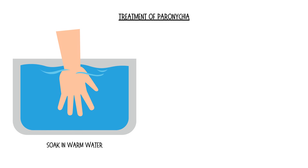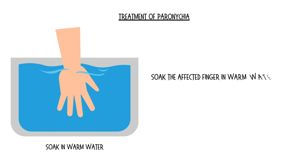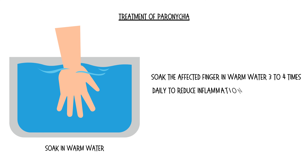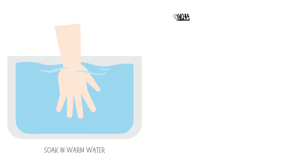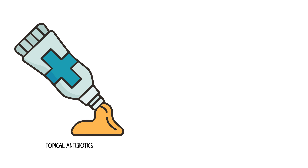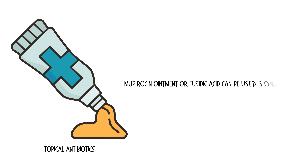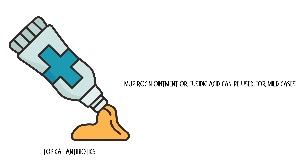The treatment of paronychia involves the following steps. First, soak the affected finger in warm water 3–4 times daily to reduce inflammation and promote drainage. For mild cases, topical antibiotics such as mupirocin ointment or fusidic acid can be used.